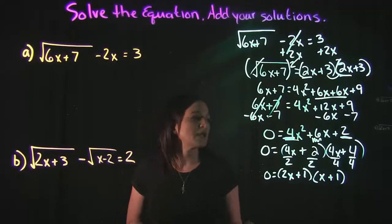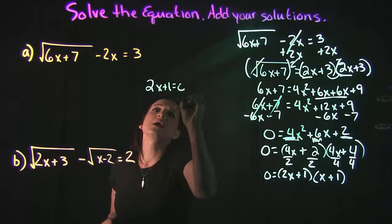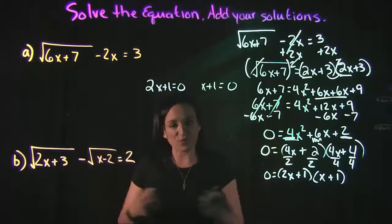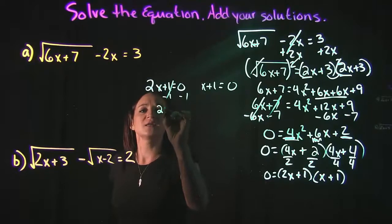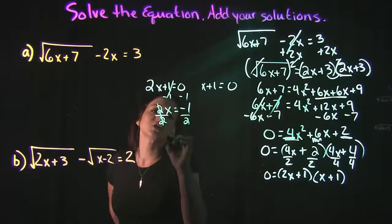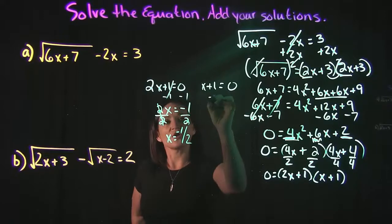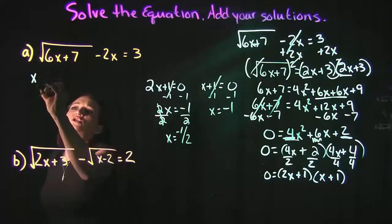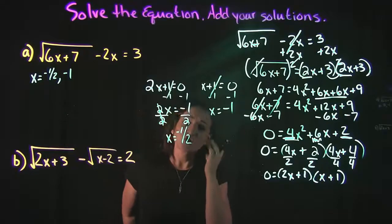Now we can use the zero factor property. We set each factor equal to zero: 2x plus 1 equals 0 gives x equals negative one-half, and x plus 1 equals 0 gives x equals negative 1. So our two solutions are x = -1/2 and x = -1.